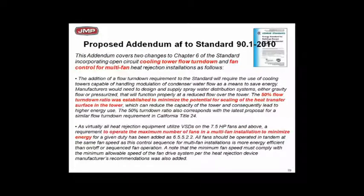ASHRAE 90.1 2010 addressed this with an addendum requiring 50% flow turndown ratio as the minimum. That addendum was approved and is part of both 90.1 2010 and 90.1 2013. If you specify that your towers be ASHRAE 90.1 2010 compliant, you'll get 50% turndown. I would suggest you always include that in your guide specifications — it's a simple requirement that protects the system.